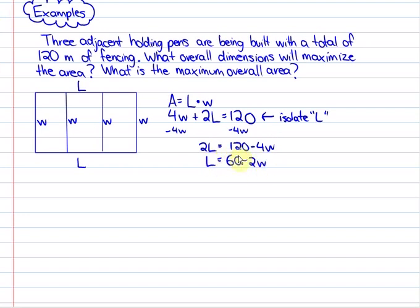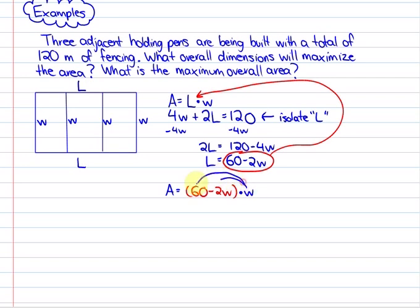To create our quadratic function we substitute this expression for length into the formula for area. So our area is equal to 60 minus two widths times widths. Let's put this into standard form by simplifying. So we have area is equal to 60 widths minus two widths squared. Or in standard form negative two widths squared plus 60 widths.